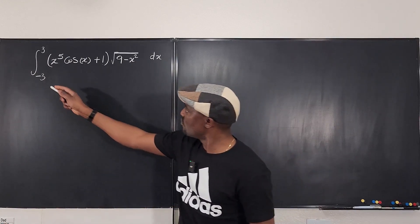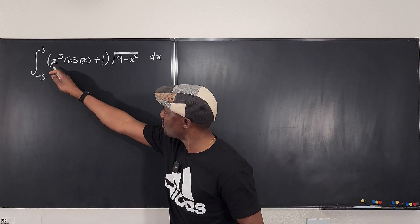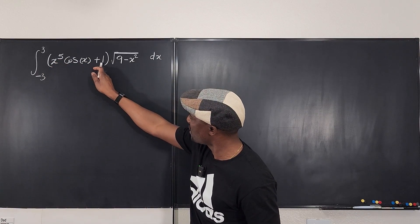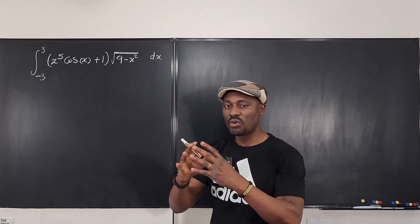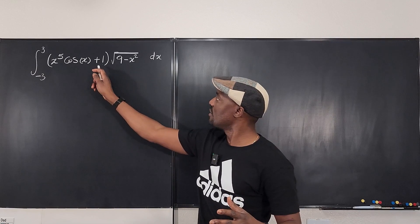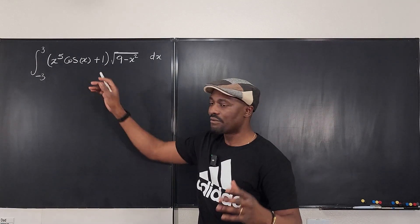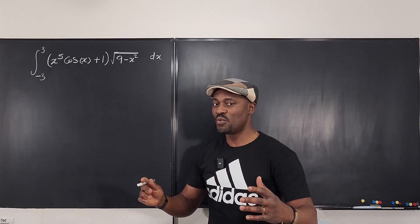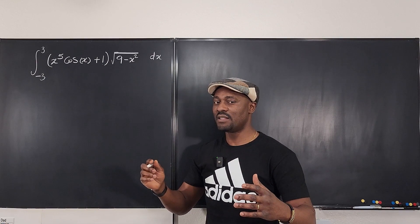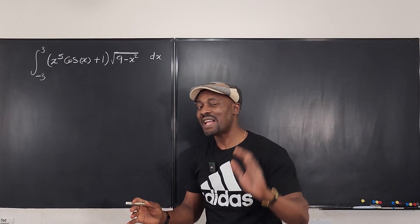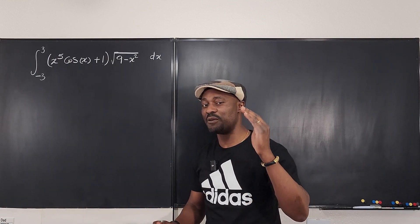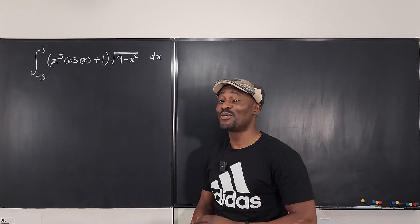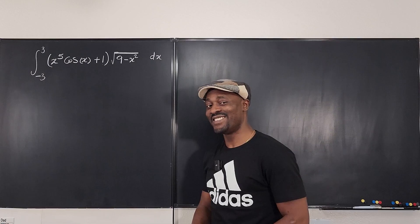However, if you read through this, this is x to the fifth times cosine x, and there's a plus one here. If we multiply out and have two separate integrals, we can then take care of them separately. So that's the first move we're going to make, and then we find out. Let's get into it.